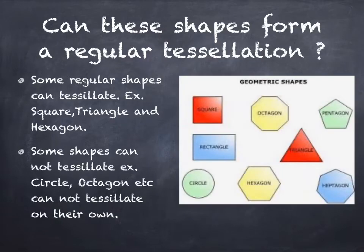Now the question arises: can these shapes form a regular tessellation? As I said, only three regular shapes can form a tessellation by themselves. They are square, triangle, and hexagon.